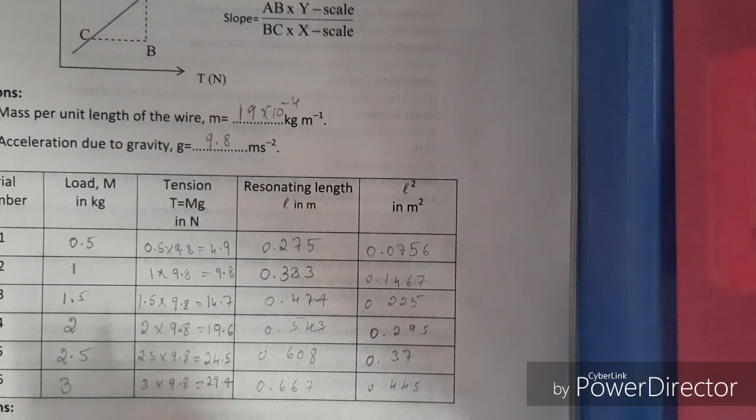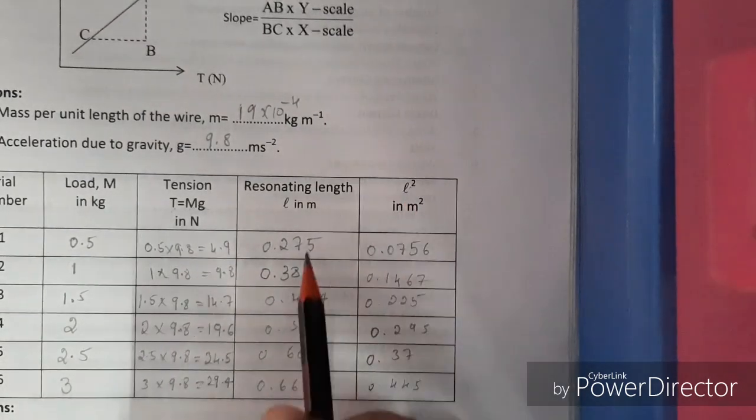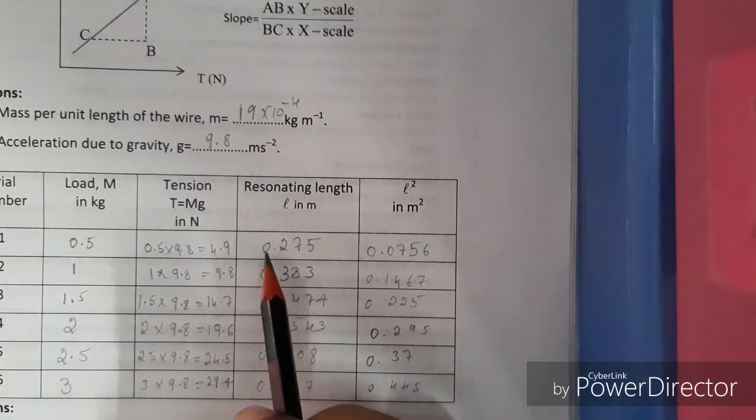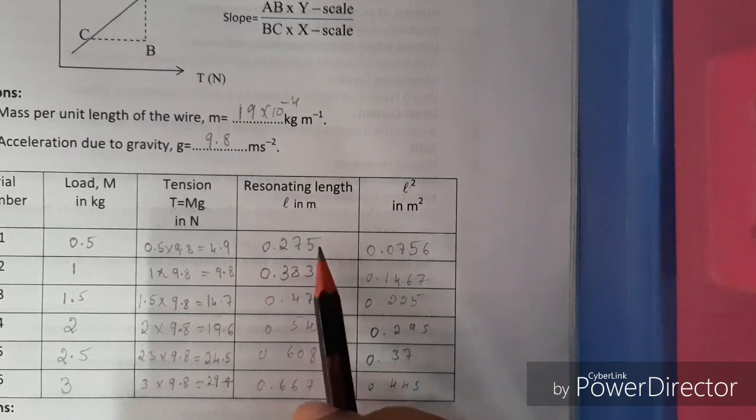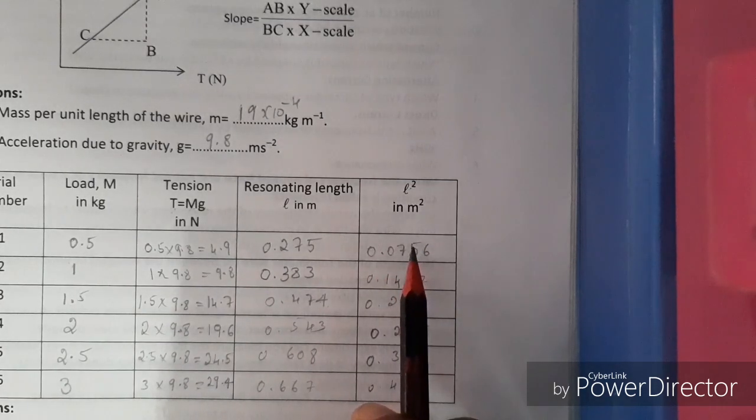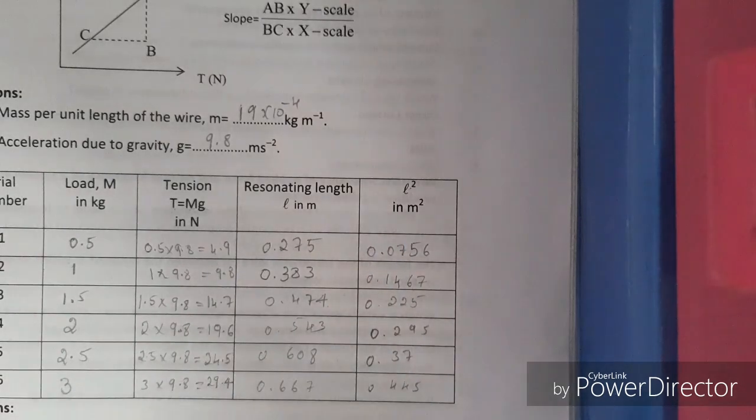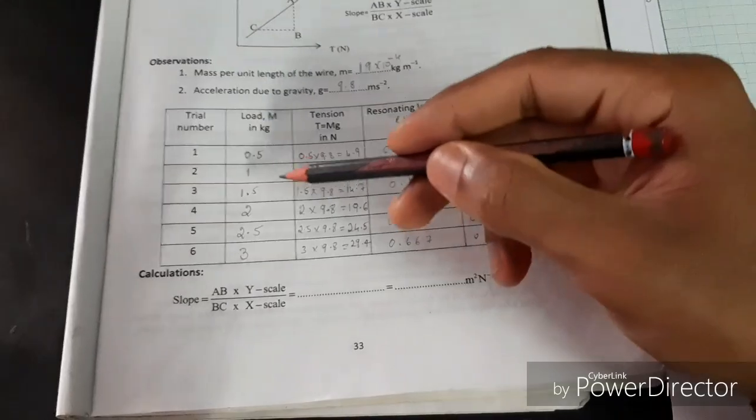After doing all the six trials, you find l² using these numbers. I mean, if you multiply 0.275 by 0.275, you get 0.0756, that is l². Using these values l² and tension, I plot a graph.